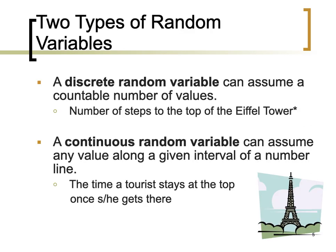There are two types of random variables: a discrete random variable and a continuous random variable. A discrete random variable can assume a countable number of values — for example, the number of steps to the top of the Eiffel Tower. A continuous random variable can assume any value along a given interval of a number line — for example, the time a tourist stays at the top once he or she gets there.